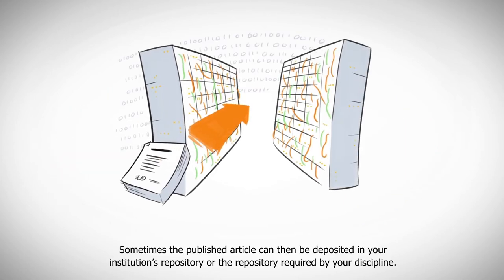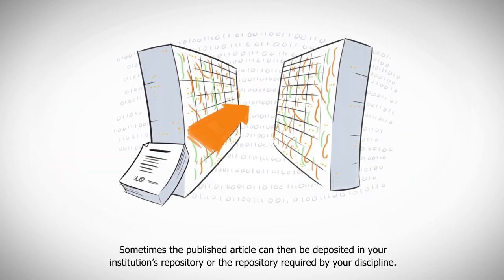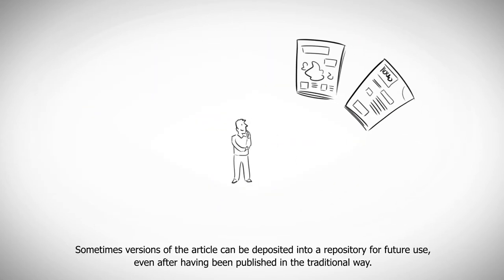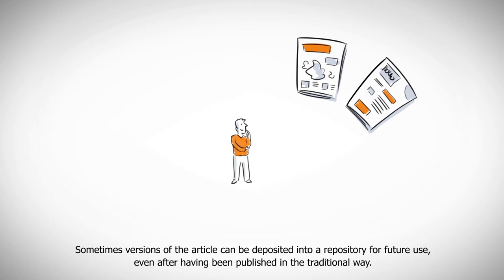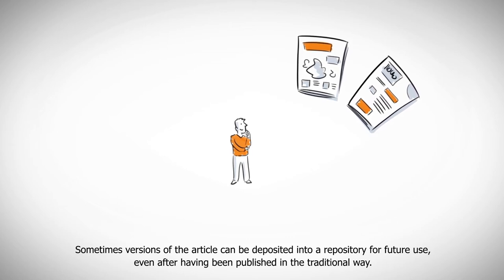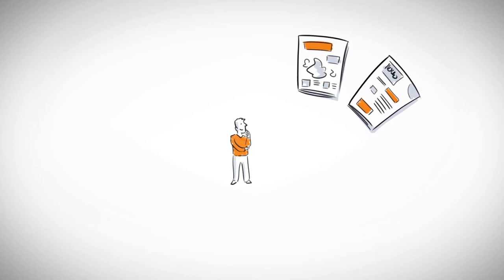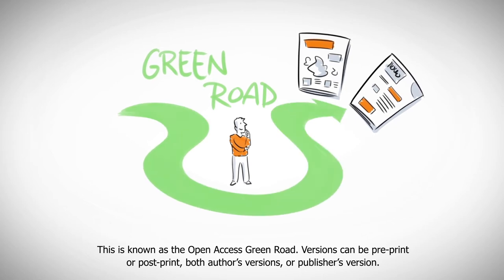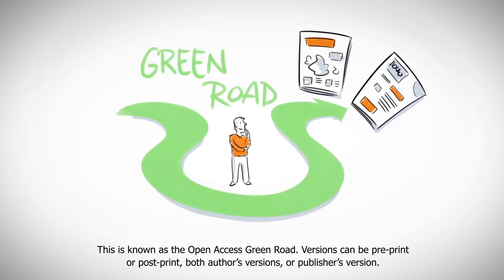Sometimes the published article can then be deposited in your institution's repository, or the repository required by your discipline. Sometimes versions of the article can be deposited into a repository for future use even after having been published in the traditional way. This is known as the open access green road. Versions can be pre-print or post-print — both author's versions — or the publisher's version.